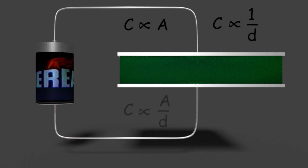That means C is proportional to A by d. From here, we can write C equals epsilon times A by d. This epsilon is the constant of proportionality, but it has significance in determining capacitance of the capacitor. This is the permittivity of the dielectric material inserted between the plates of the capacitor. If all other factors are fixed, the capacitance depends on the dielectric material used — more precisely, on the permittivity of the dielectric material used in the capacitor.